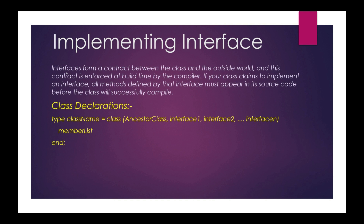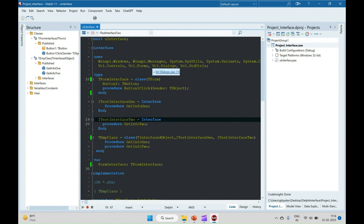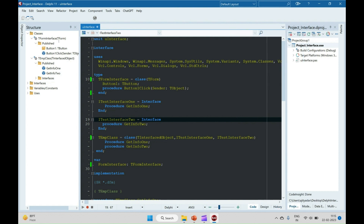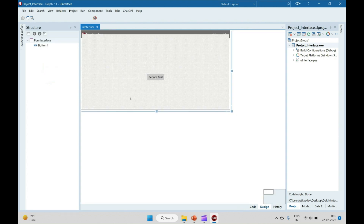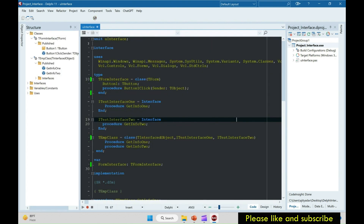For class declaration with interface inheritance, we write the class name equal to class and list all interfaces to inherit. To inherit interfaces we need to also inherit the TInterfacedObject class. Let's move to the Delphi part where we will understand how to write and inherit the interface in a class. I have created one UI application with one button, and on button click we will try to access the interface.